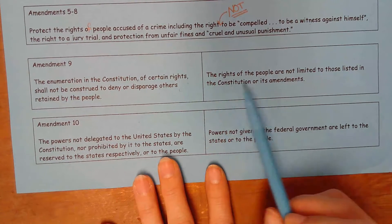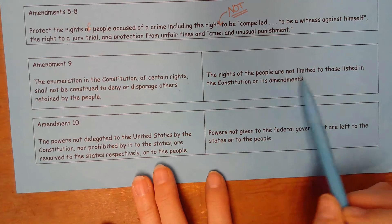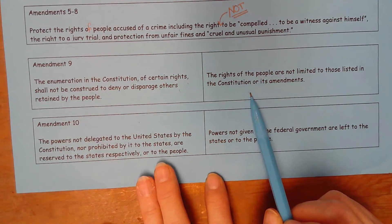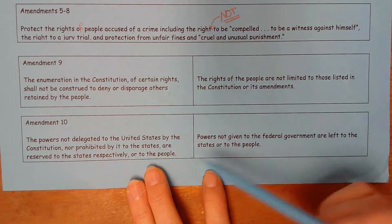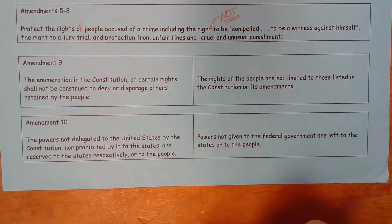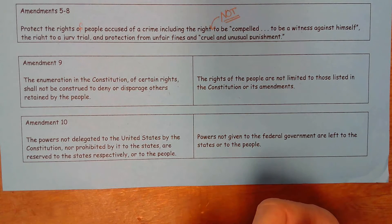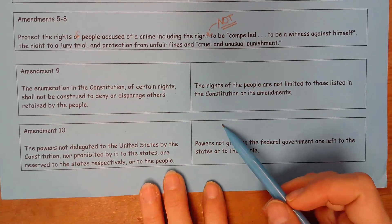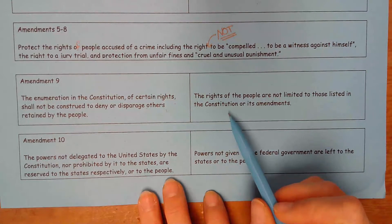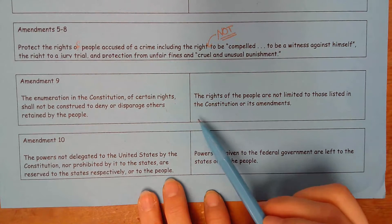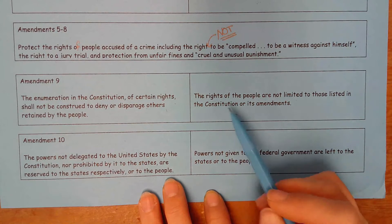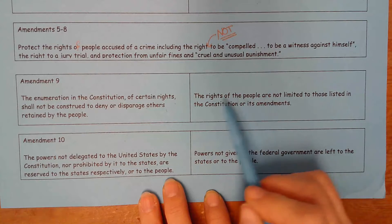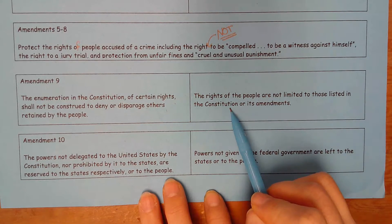In other words, the rights of the people are not limited to those listed in the Constitution or its amendments. So just because the Bill of Rights and the Constitution and the other amendments do not say you have a particular right, the Ninth Amendment says we can't list every right that United States citizens have. The people still have rights that we don't list here.